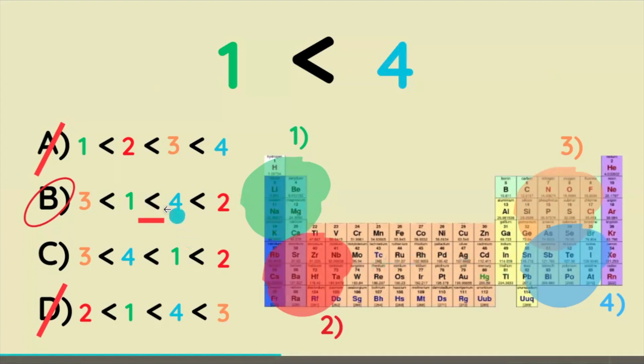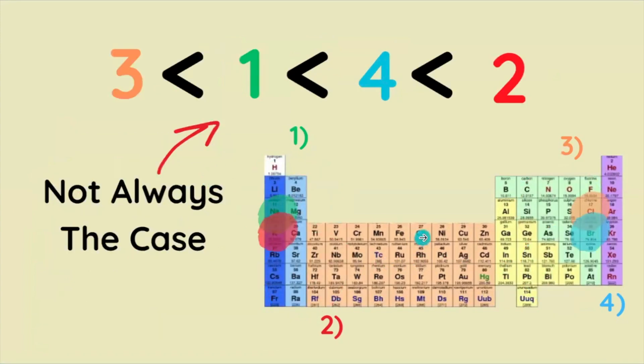So B is going to be the correct answer. However, it's not always true that any four corners of elements will always have this order of atomic radius size. Be sure to check out the video on your screen to learn about the major exceptions to this.